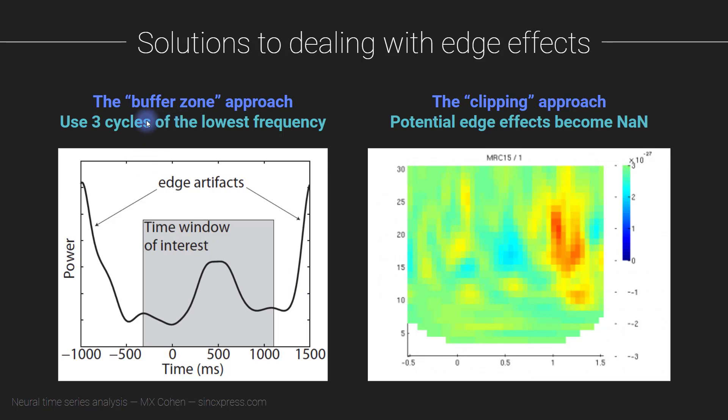So the first solution is what I call the buffer zone approach. So essentially what you want to do is make sure that you cut your epochs sufficiently long. You want your epochs, your time epochs, your trials to be cut sufficiently wide such that the edge effects will totally subside by the time you get to the time window that you are actually interested in.